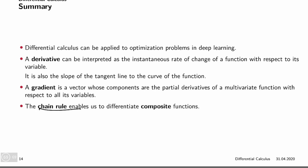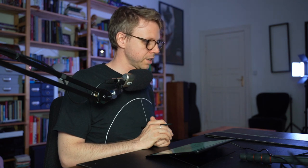The chain rule enables us to differentiate a composite function. In deep learning, as soon as you have a deep neural network, you always have composite functions because you're always layering functions into each other. With this, I conclude this lecture and review on differential calculus. See you next time for our first lecture on a deep learning model, namely linear regression — well, it's actually a shallow one, but it can be interpreted as a neural network, just a shallow one. Bye bye.